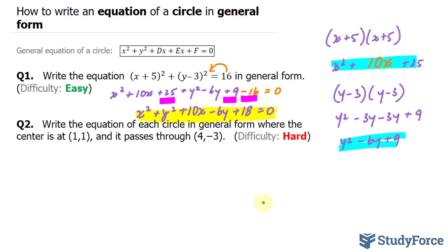In question 2 we're asked, write the equation of the circle in general form, where the center is at (1, 1) and it passes through (4, -3). The center is at (1, 1). This represents the x coordinate and the y coordinate. What we have to do is put this in standard form first, and then convert it into general form the same way I did in question 1.